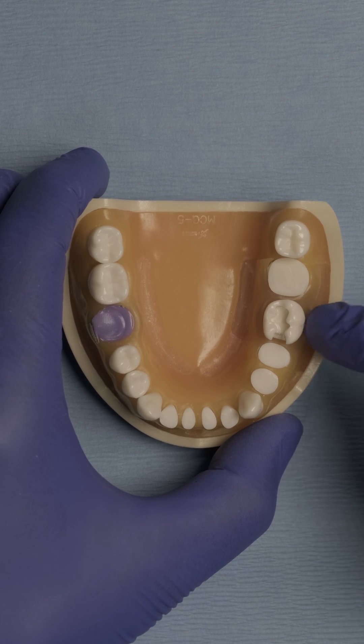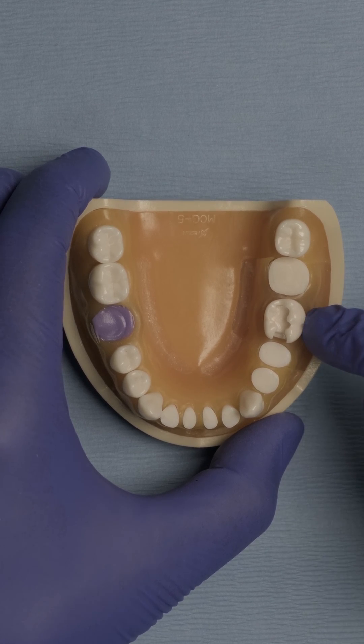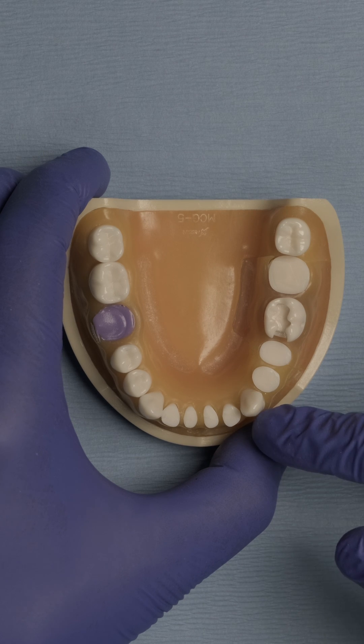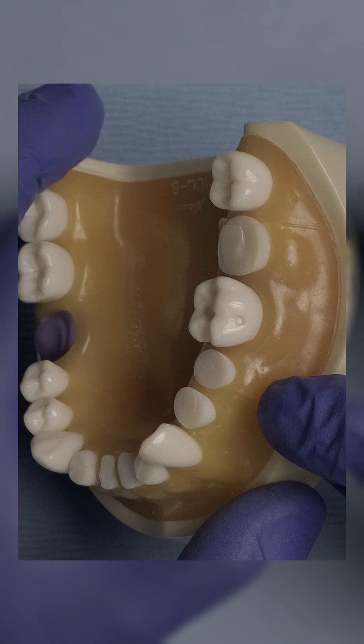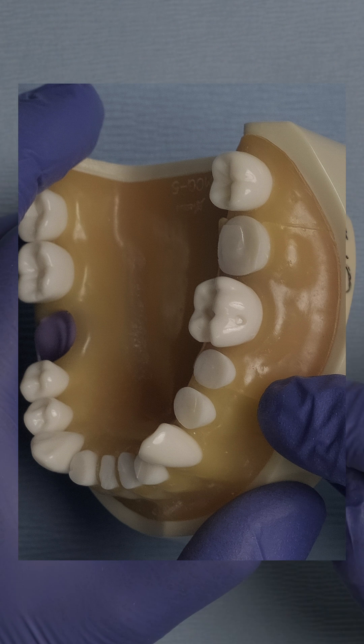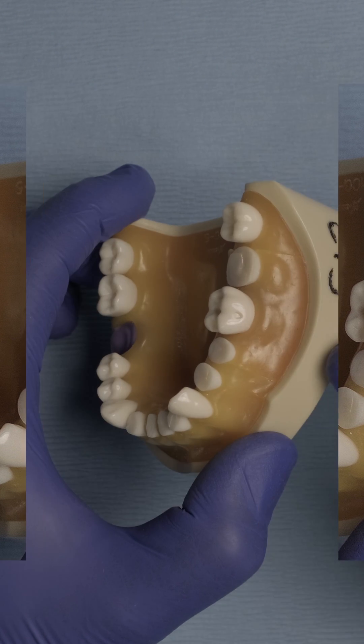I'm going to place a W3 clamp on tooth number 19 and isolate all the way to tooth number 22. As you can see, tooth number 20 and 21 have been literally sectioned almost to the gingival margin, one of them very close to it and the other one slightly above the gingival margin.